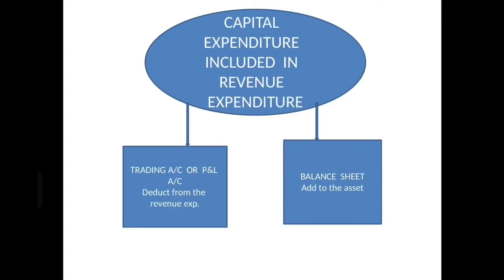Next is capital expenditure included in revenue expenditure. For example, suppose you purchased a machine — expenditure for purchasing machinery is capital expenditure. But by mistake, you added that amount in purchases. Purchases is purchase of goods, but by mistake you recorded the machinery cost in purchases. So how do you rectify this? Deduct it from purchases in the trading account and add it to machinery in the balance sheet. First effect: deduct from the revenue expense in trading or profit and loss. Second effect: add to the asset in the balance sheet.